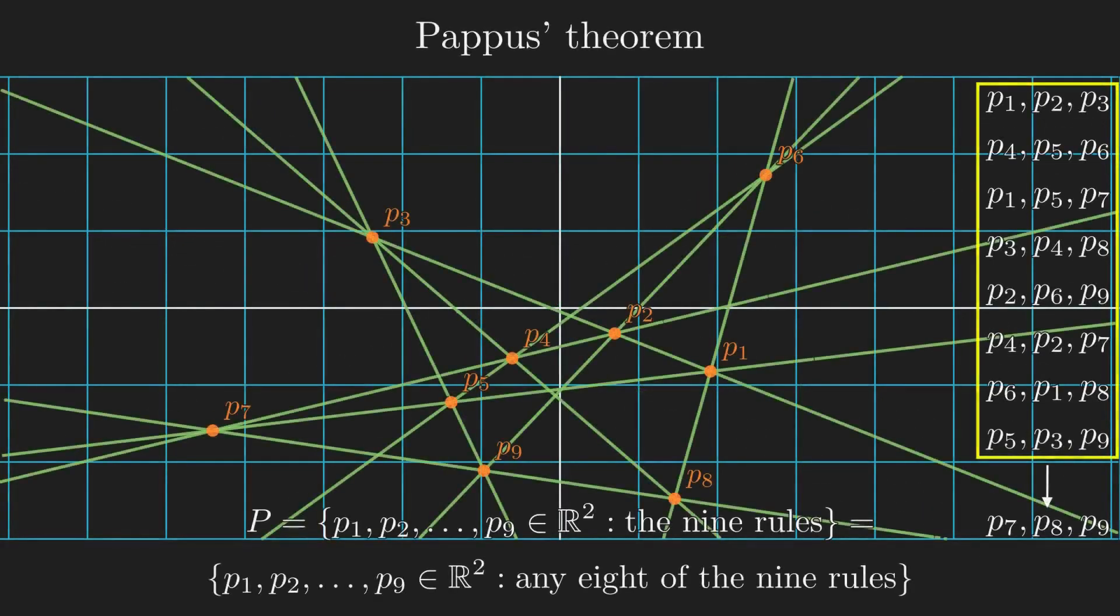Now that I've shown the visualization of Pappus' theorem, how do I formally prove it? First, I have to formally define what it means for three points to be collinear.